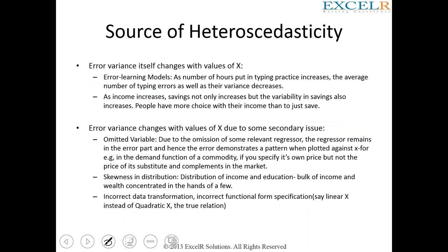What are the various sources of heteroscedasticity? Why does it exist in the first place? Error variance — that is, variance in the error — changes with values of x. That is heteroscedasticity. We want equal variance; we don't want the variance to change as your input values change. When you do not have constant variance over all the observations and input values, it is called heteroscedasticity.